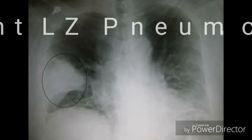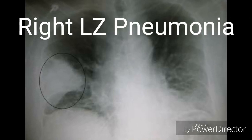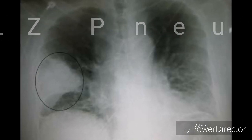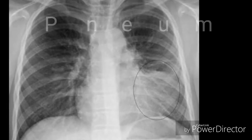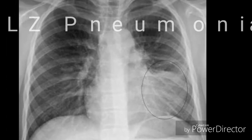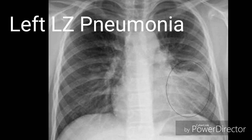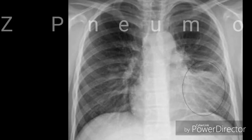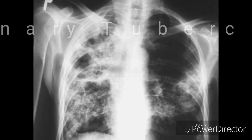This is a chest X-ray PA view showing consolidation in the right lower zone, which is suggestive of pneumonia. This is another similar X-ray showing consolidation in the left lower zone, which is also suggestive of pneumonia.